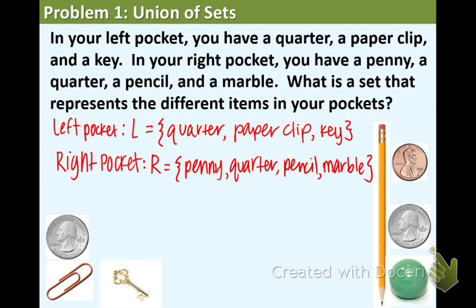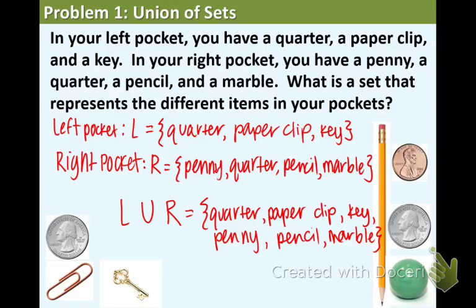Now we're going to take the union of the left pocket and the right pocket. And we're going to list all of the elements in both sets, but as I said a moment ago, you do not have to list elements more than once if they're in both of the pockets. So in the union of the two sets, we have a quarter, a paper clip, a key, a penny, a pencil, and a marble. And that completes this example.